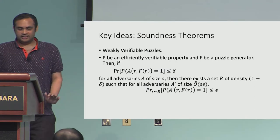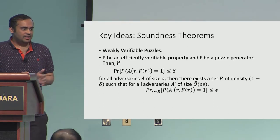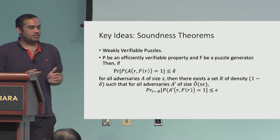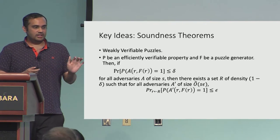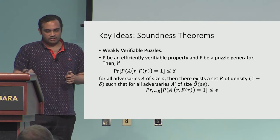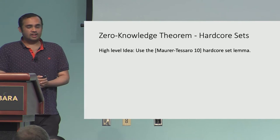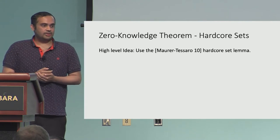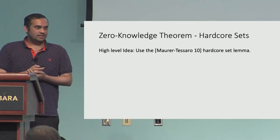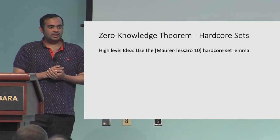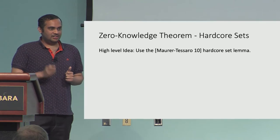Let's look at how to argue the soundness theorems in both cases. The idea was present before our work, using the notion of weakly verifiable puzzles. I won't talk about it in detail — you can look at our paper or the Kennedy-Heleby-Steiner paper. For the zero knowledge theorems, we rely on a machinery called hardcore sets, specifically a beautiful theorem by Maurer-Tessaro, who proved an indistinguishability version of the hardcore set theorem.